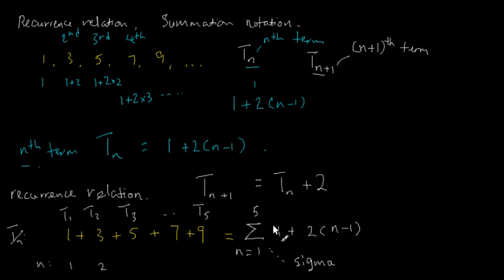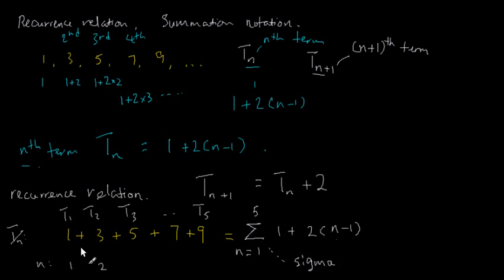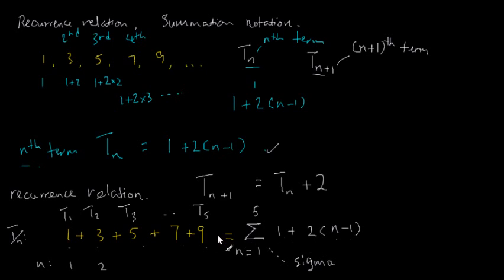This means: add up all the terms given by this formula, starting from n equals one — substitute n equals one to get a value, then n equals two, and so on all the way up to n equals five. This gives us all the numbers in the sequence, and then we add the whole lot up. That's what the sigma notation means. And if I have a different formula for tn, I can use that different formula and get a different sequence.